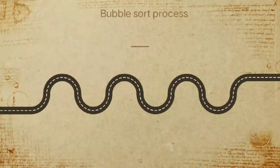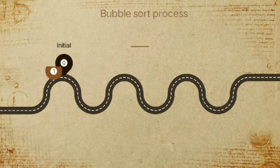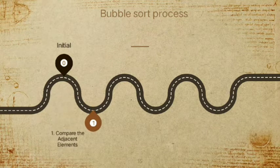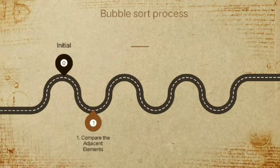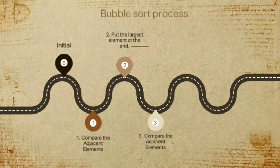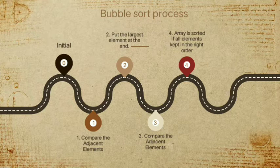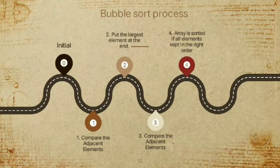That is the whole bubble sort process. From the start, we display initial array values. In step 1, we compare adjacent elements. In step 2, the largest element is placed at the end. In step 3, we again compare adjacent elements. In step 4, the array is sorted once all elements are in the right order.